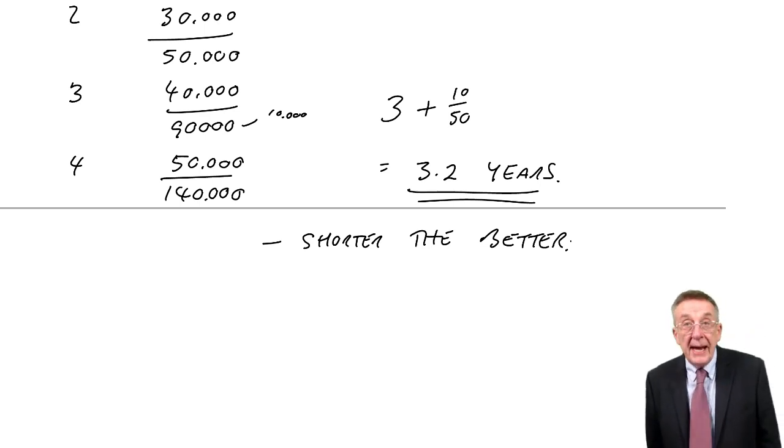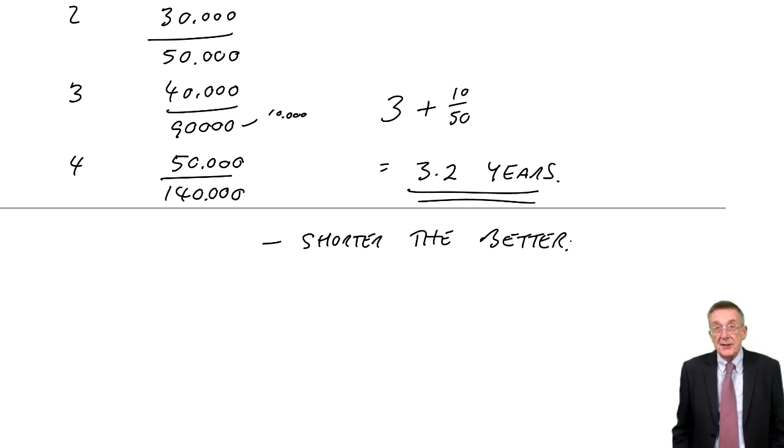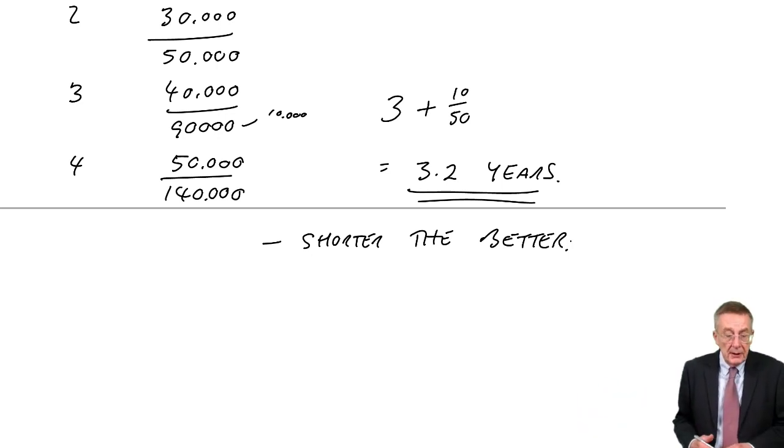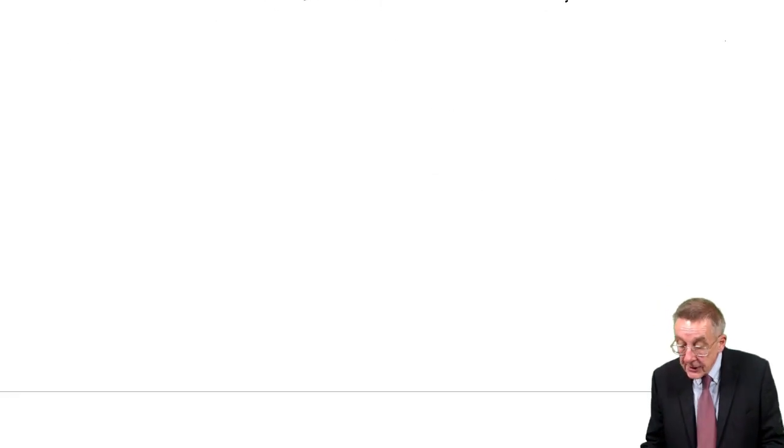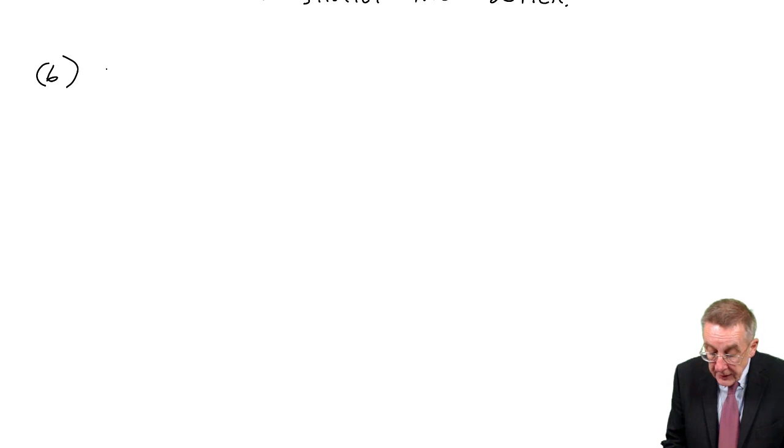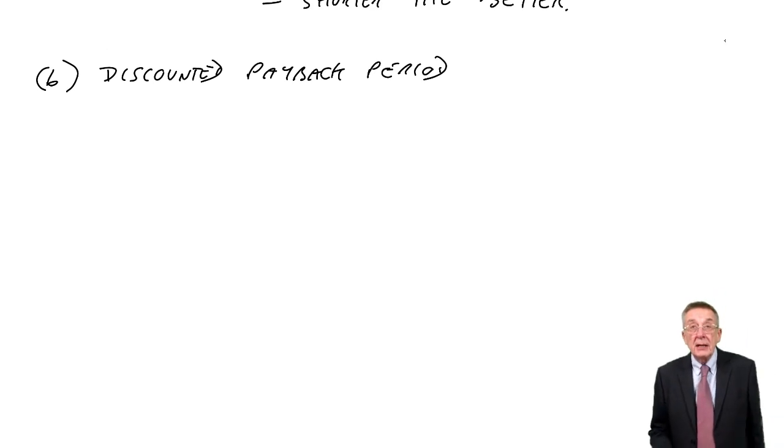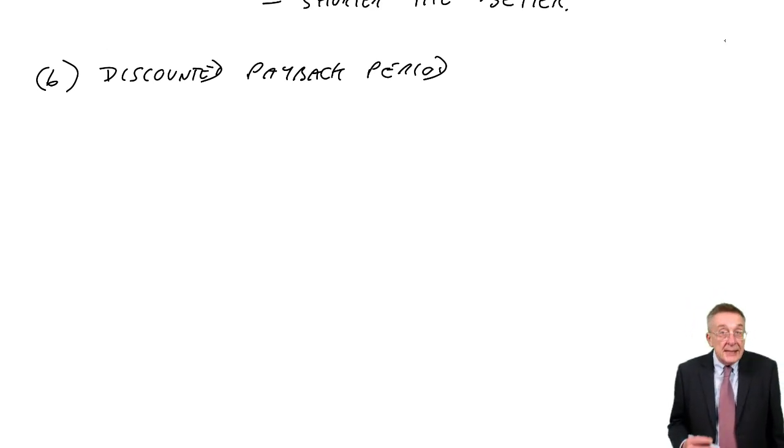So that's payback period. The only thing is that the straight payback period is ignoring all this interest business. The later you get the money, there's more interest cost. Perhaps to make it slightly better, part B asks what's the discounted payback period. If you get a question on this, check carefully whether it asks for the payback period, and if it does, it's 3.2 years. If it asks for the discounted payback period, it's exactly the same idea, except we do it on the discounted cash flows.